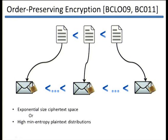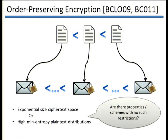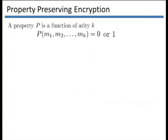Inspired by this work, we asked if there are properties or schemes with no such restrictions — namely practical schemes with strong security guarantees. The first step to generalize this notion of property-preserving encryption is to generalize the notion of a property. We define the property to be a function on K messages which outputs 0 or 1.